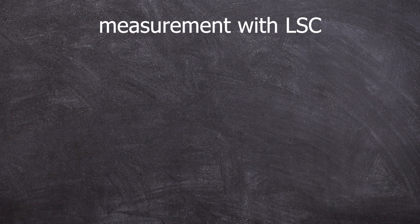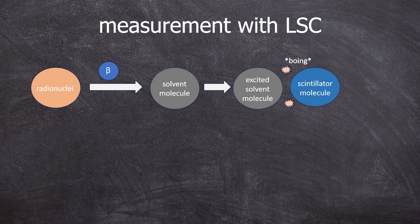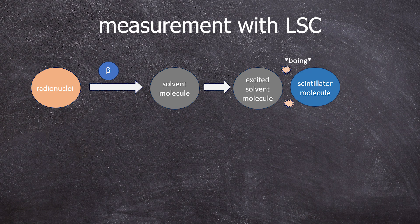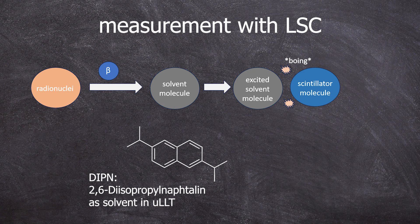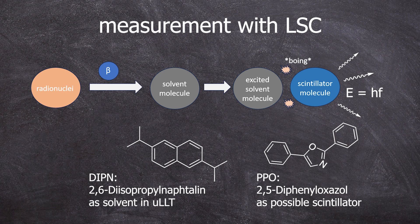Before I show you the spectrum, let me briefly explain how an LSC spectrum is generated. We have a radioactive sample that decays. The energy of the emitted beta particle excites the molecule of the aromatic solvent, causing them to collide with the scintillation molecules. These molecules then have excess energy and emit this energy in the form of light, which can be measured by detectors.